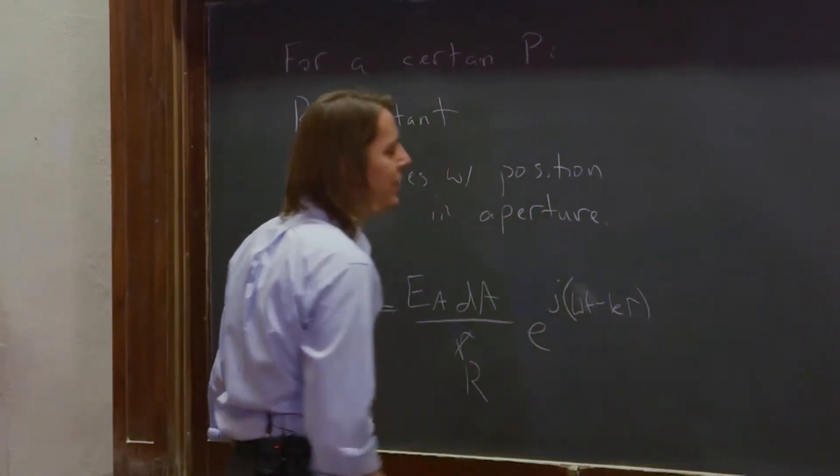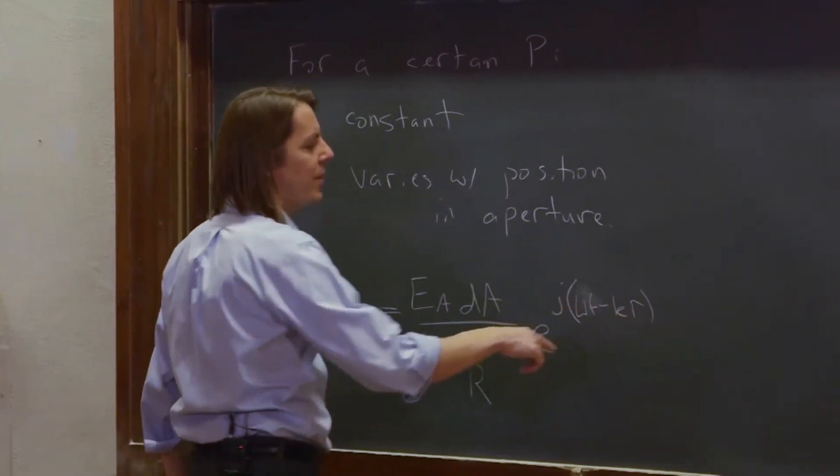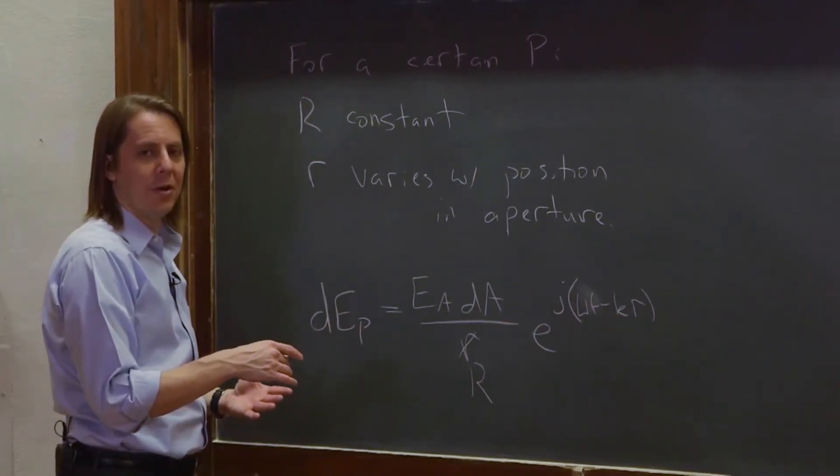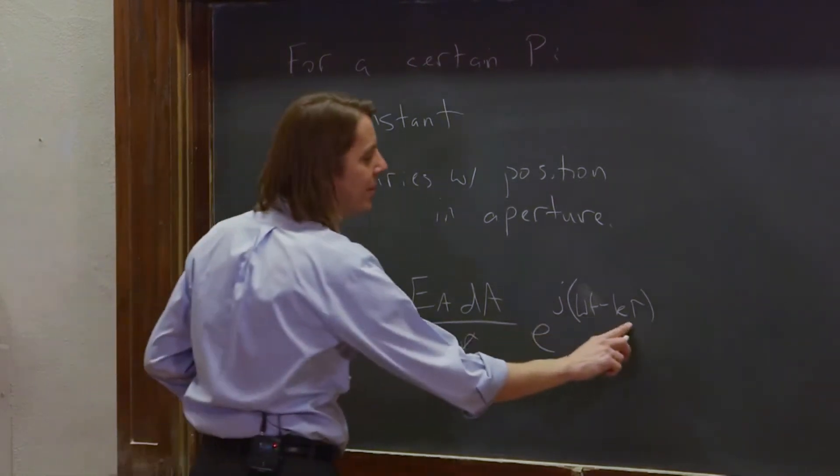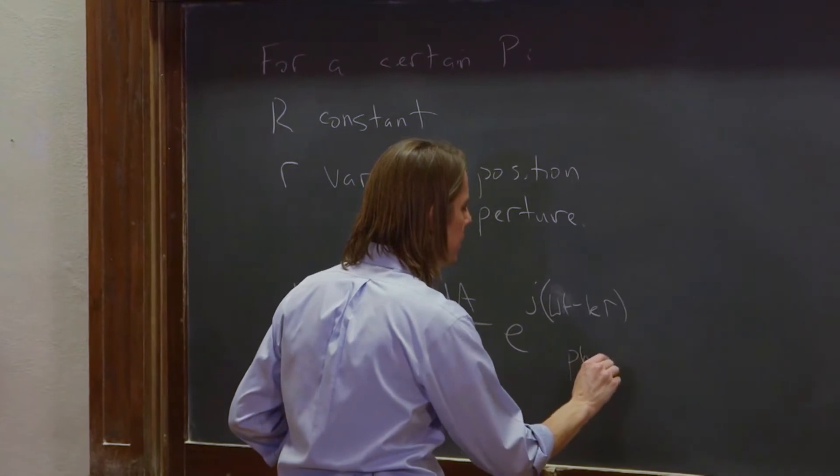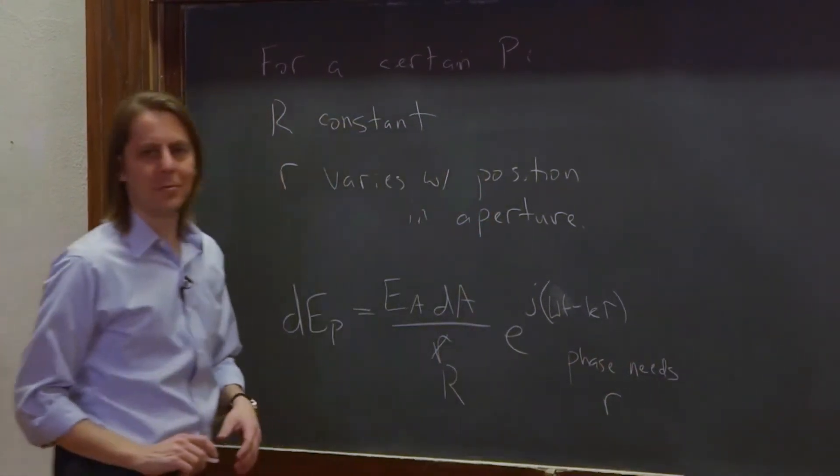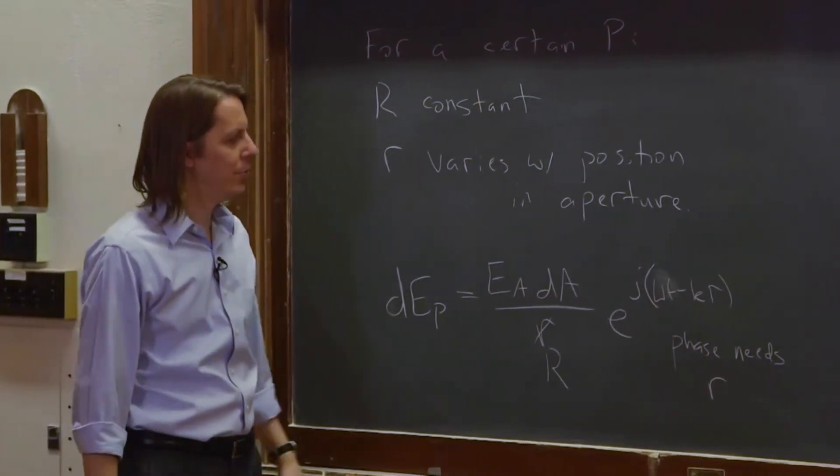However, here, just like for the slit, when you're talking about the difference, we're talking about little r times k. The differences between little r and big R are significant compared to the wavelength, so it does matter for the phase. So the phase needs little r. We can't take everything out of the integral, because then the problem would be trivial.